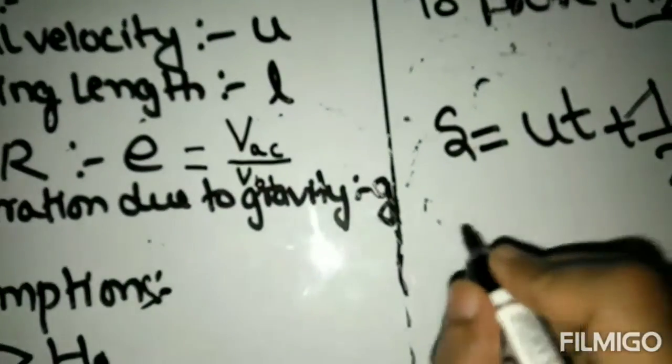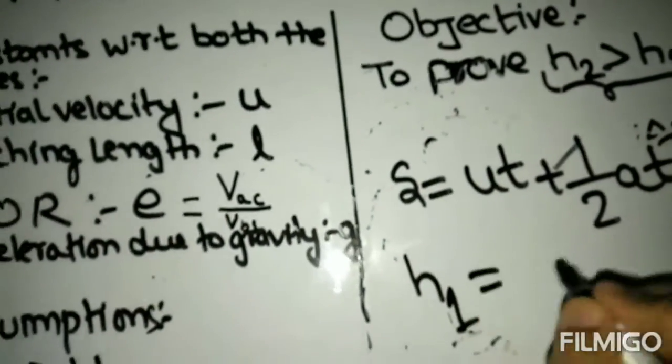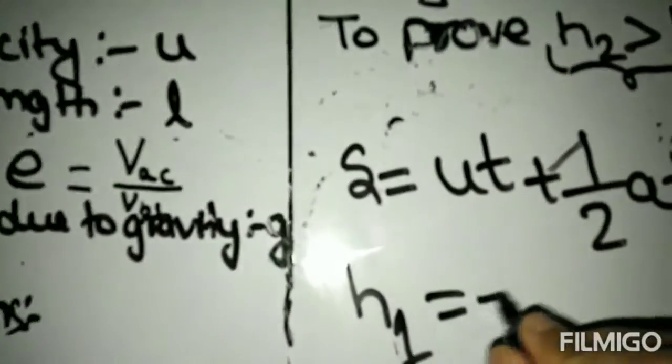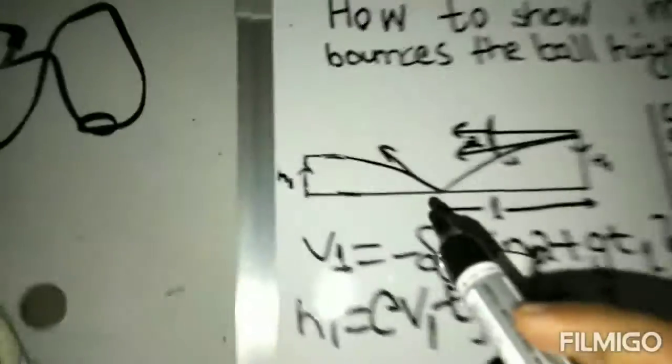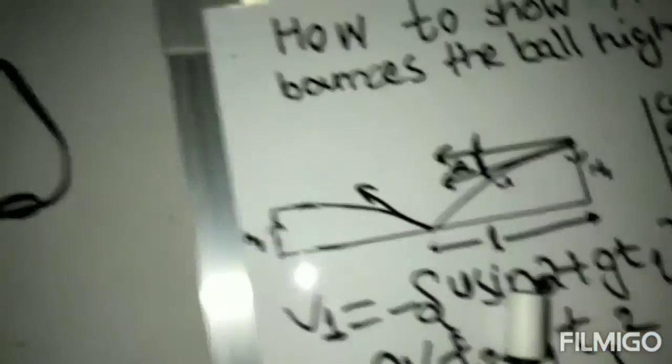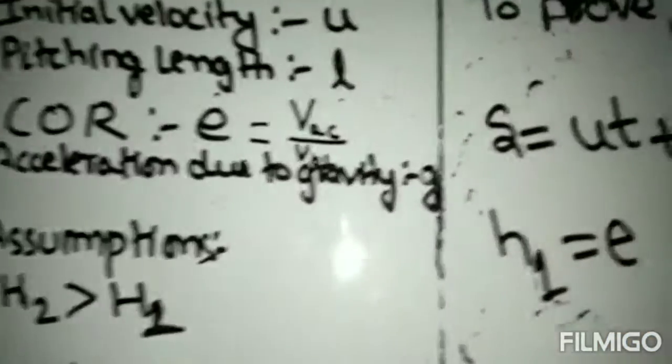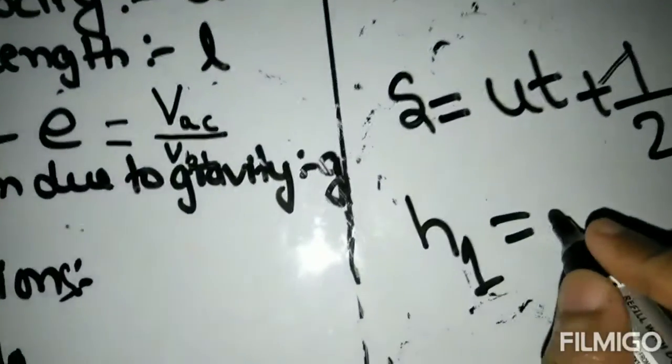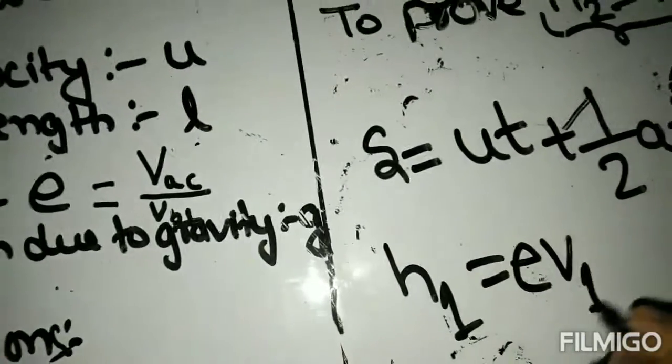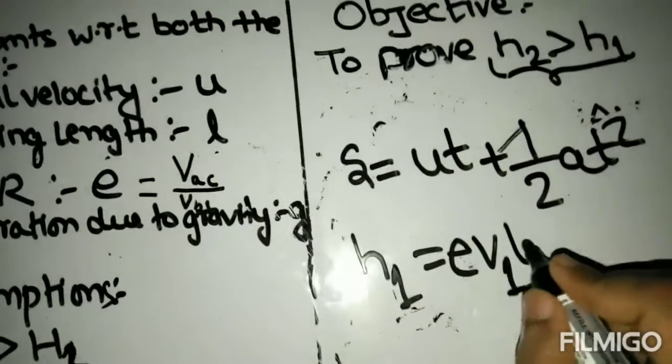Now, putting this equation in the context of case 1, we'll get s as h1, u as, well, this u is not same as this u, because this u is the initial velocity at this point, at the point right after the collision. And it is equal to v3 or we can say ev1 into t3 plus 1 by 2.